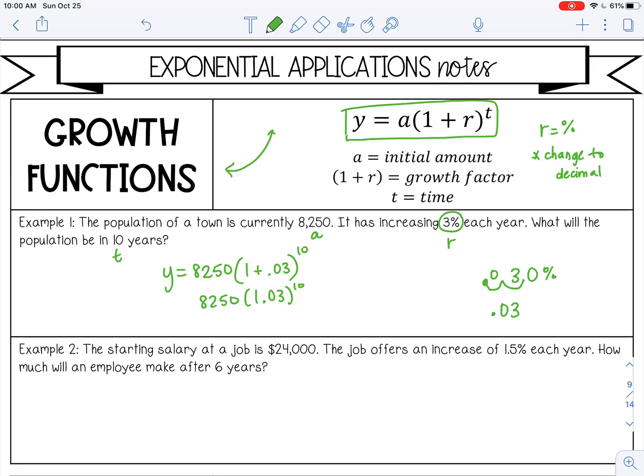And by the way, for exponent, usually in your calculator you're looking for the caret key which looks like that. That will make your 10 an exponent. My answer is 11,087. And since you're talking about people, population, we're going to leave it as a whole number.